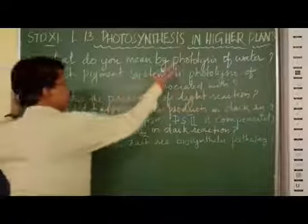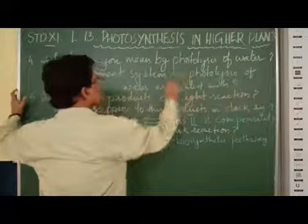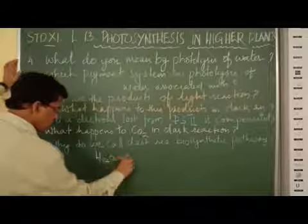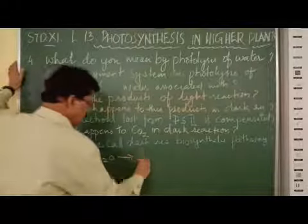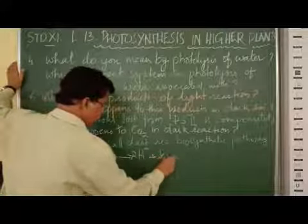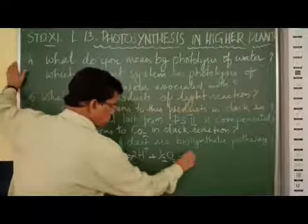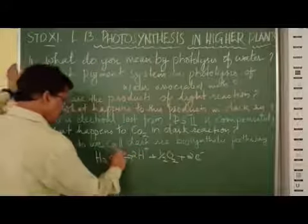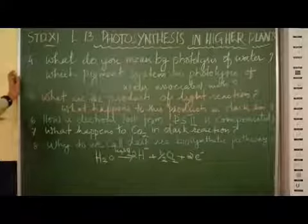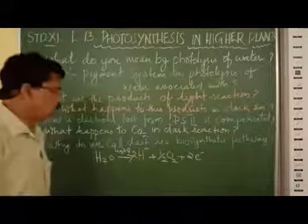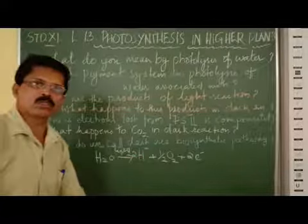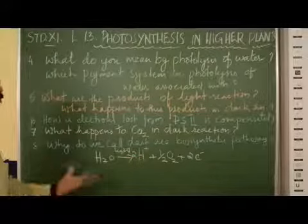So, we can understand that photolysis of water is the breakup of water molecules into hydrogen atoms plus oxygen, half oxygen molecule plus 2 electrons. In the presence of light, water splits into 2 hydrogen atoms plus half oxygen molecule and 2 electrons. This process of splitting of water in the presence of light is photolysis of water.